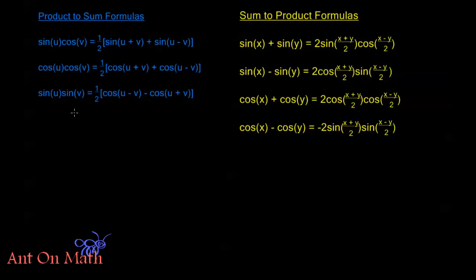Now, these product-to-sum formulas come directly from our addition formulas for sine and cosine. So first, let's go ahead and look at this first one, and maybe I won't do them all, but you'll get the idea of how we can find any of these formulas.